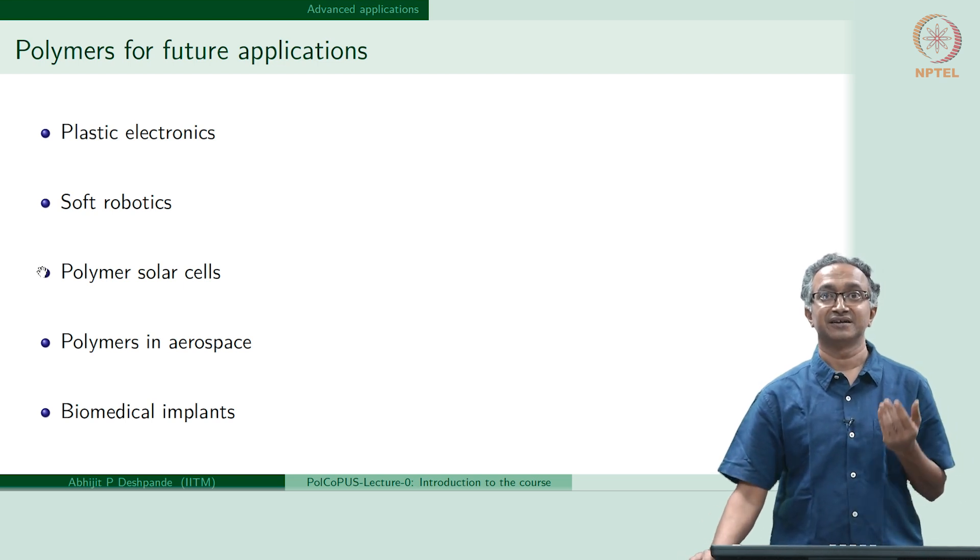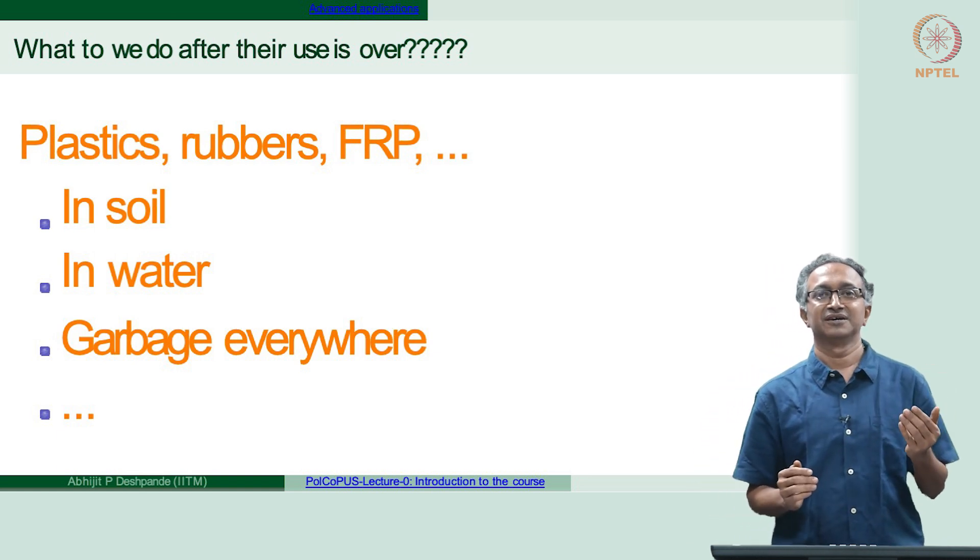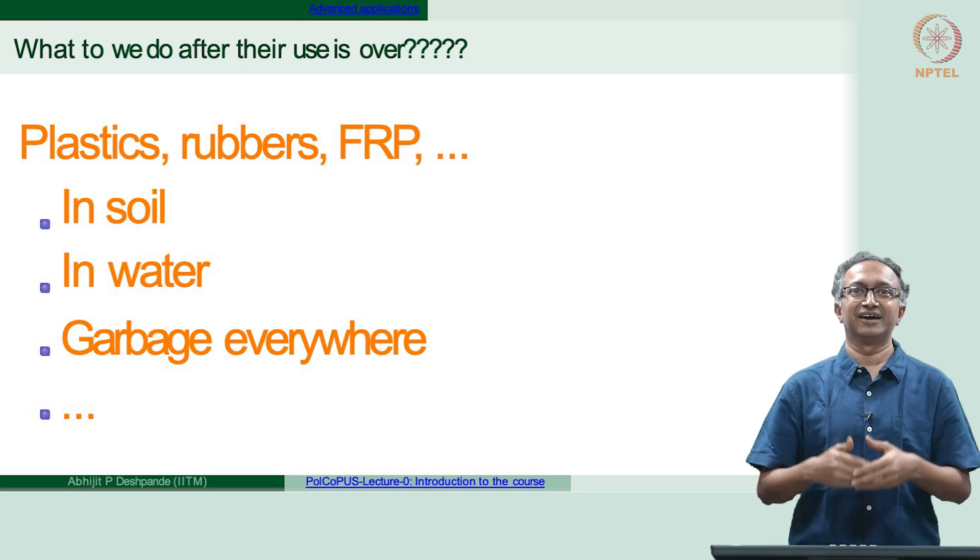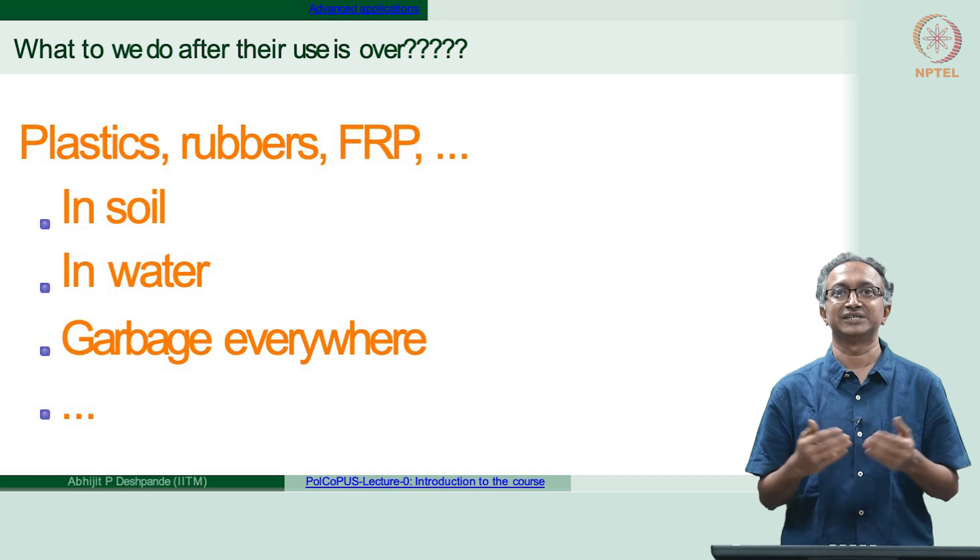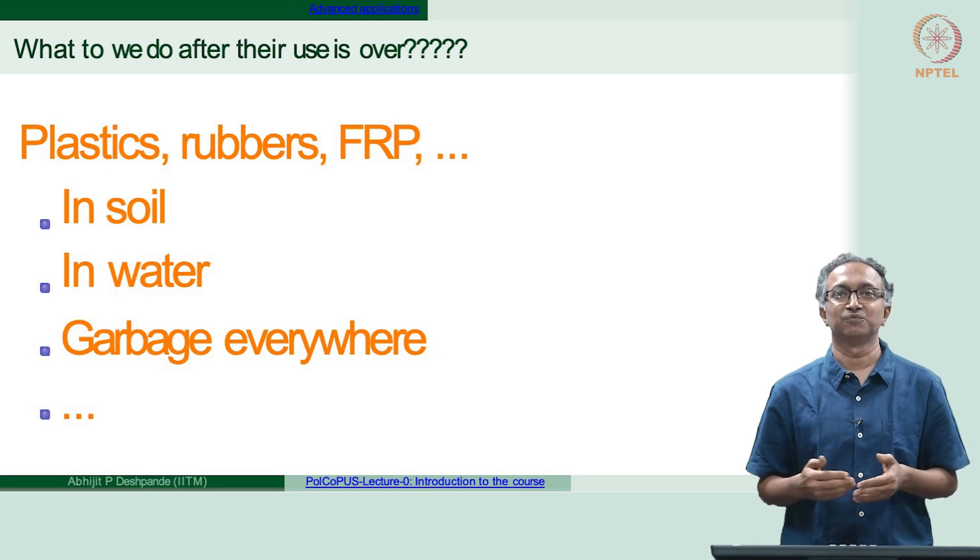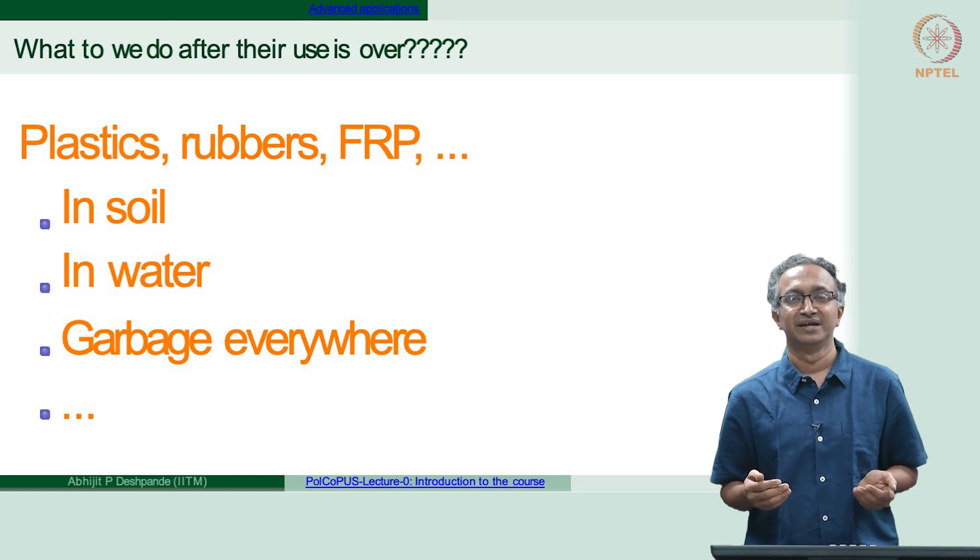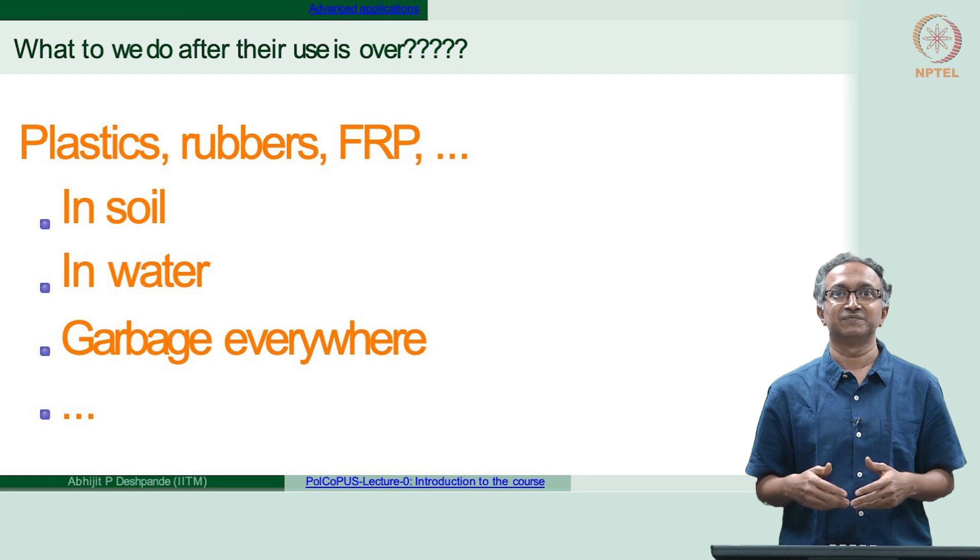Of course, there is a big question also. We hear a lot whenever there are plastics, rubbers - all of these are everywhere as waste materials also. What happens to them once we are finished using them? What do we do with them? How do we recycle them? How do we reuse them? Can we also make them out of materials which are renewable so that we have sustainable materials with us?